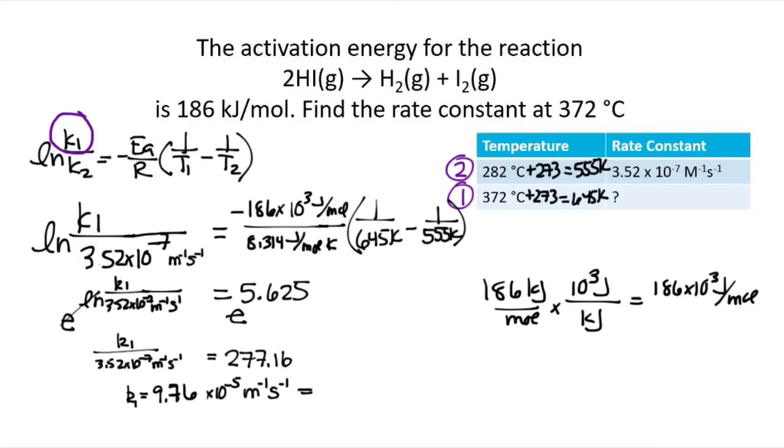So that number is bigger than the rate constant at 282 Celsius. And that makes sense. Our rate constant is bigger because our reaction is faster at a higher temperature than it was at a lower temperature.